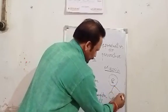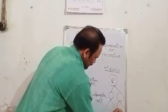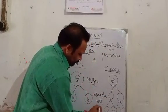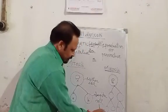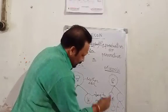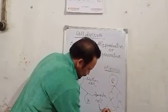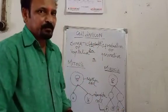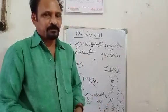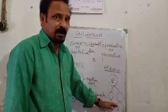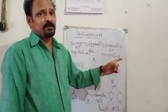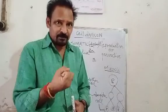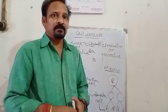In the case of meiosis, suppose a mother cell contains 16 chromosomes. Two successive divisions take place, as a result of which four daughter cells are formed. All four daughter cells have half the number of chromosomes — that is eight in each. Since the number of chromosomes becomes half, meiosis type of cell division is also known as reduction division.